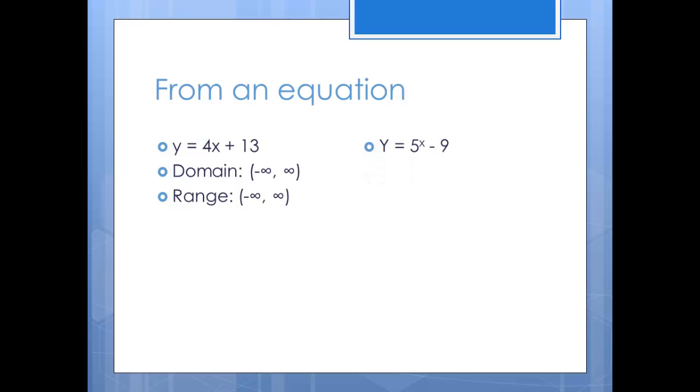The next equation has an exponent and the exponent is a variable. That means the equation is exponential and the graph will curve. Think about the kind of numbers you can substitute for x to figure out the domain. Again, there are no limitations on x here. I can put any number I want as an exponent. That means the domain is all real numbers.